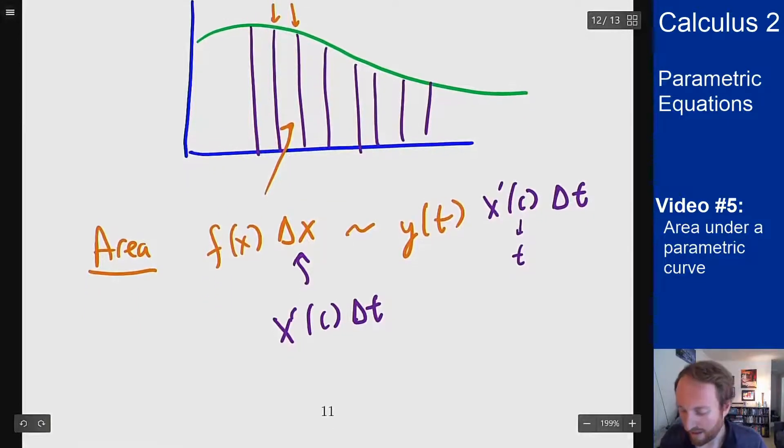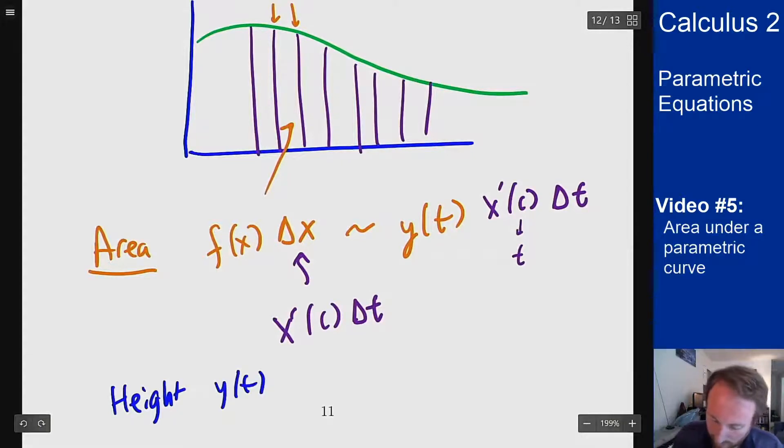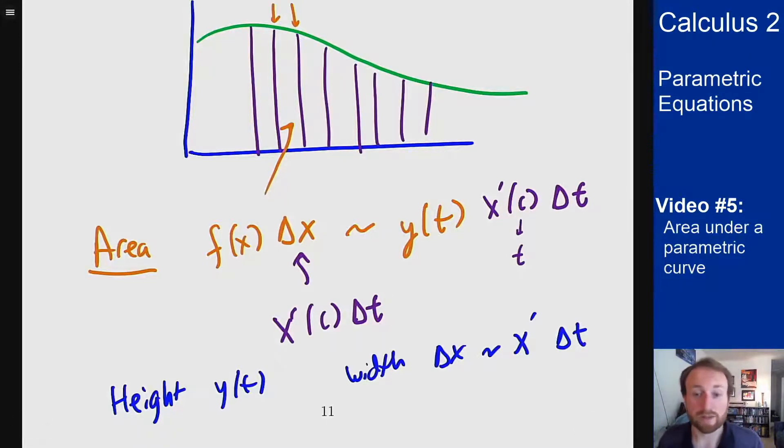The key point is here: the height of my rectangles is y of t. My width is delta x which I can rewrite as x prime times delta t. And then in the limit, this goes to a Riemann sum and goes to integrals like it did before.